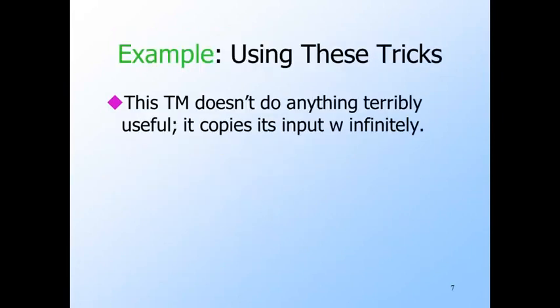Here's an example that will illustrate the three tricks we talked about. The Turing machine is not really useful — all it does is copy its input over and over again, moving right on the tape. Here are the values that will appear in the control component of the state, along with the intuition about what they're supposed to be doing.